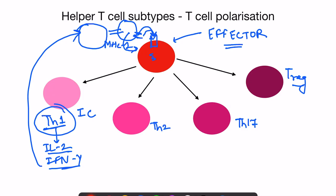IL-2 also acts back on the T helper cells themselves, causing their proliferation — so the clone is expanding. After expansion, these cells go and sit in various places in the body. For example, if an antigen entered via the GIT and the APC presented it to helper T cells there, those T cells proliferate. Since the antigen may have already crossed the barrier and entered circulation or lodged in another lymph node, the T helper cells proliferate and recirculate throughout the body to find the antigen.